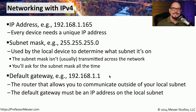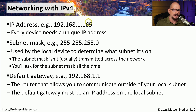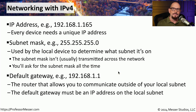The default gateway is the IP address of a device on your local subnet that allows you to communicate outside of that subnet. For example, if we have an IP address of 192.168.1.165 and a subnet mask of 255.255.255.0, a common default gateway could be 192.168.1.1. This address is configured and assigned to the router on your local subnet by your network administrator, and it must be an IP address that is on your local network.